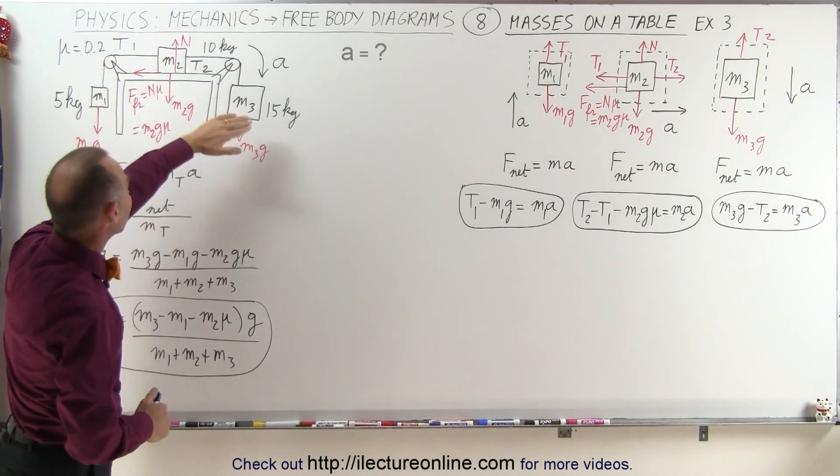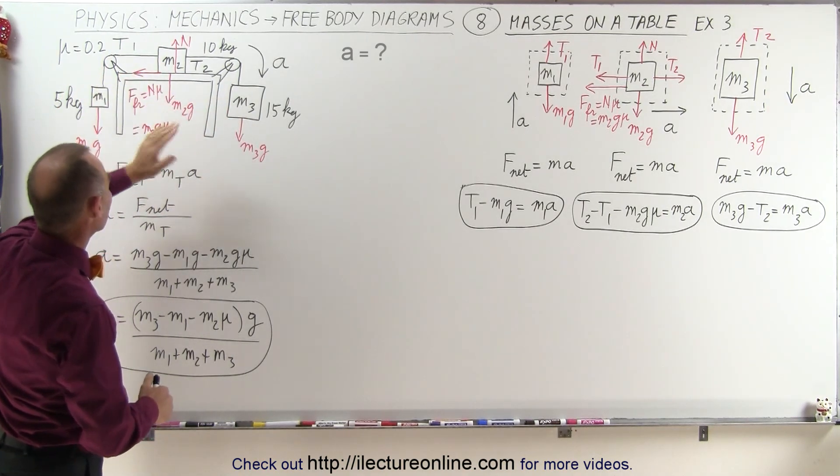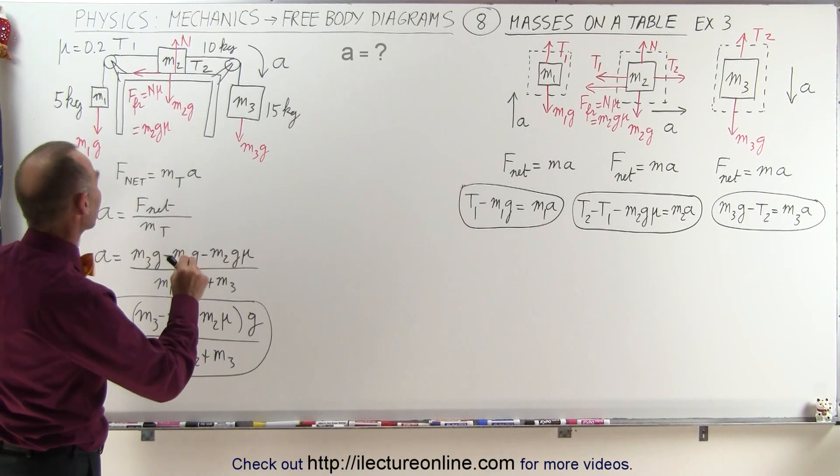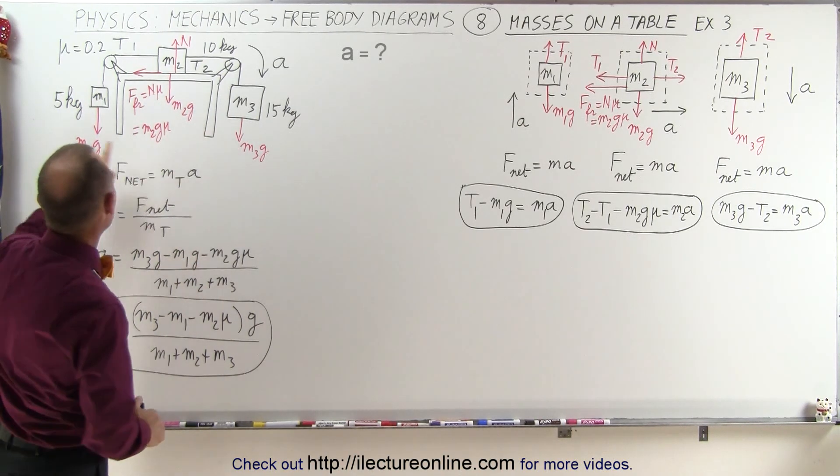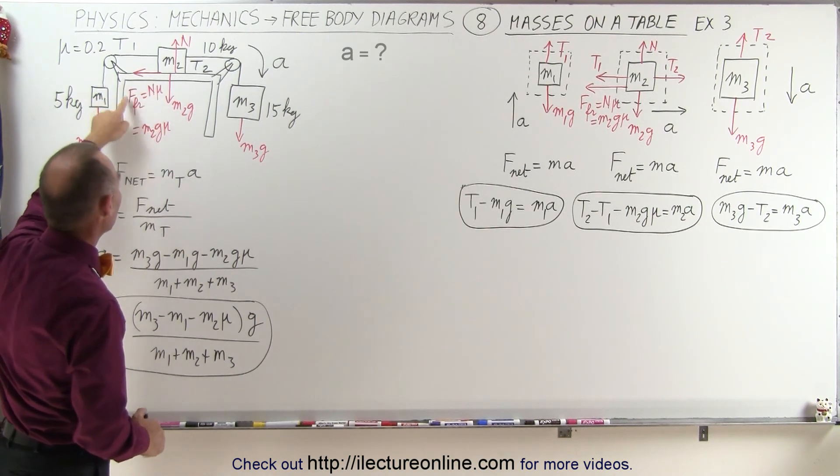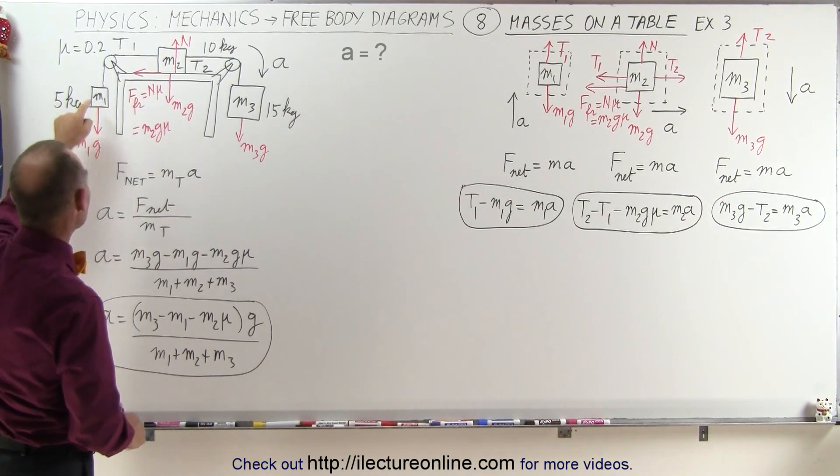Notice that everything is connected, we do not look at T1 or T2, those are internal forces. We only have three forces controlling the acceleration: the force aiding the acceleration, and the two forces opposing the acceleration, in this case the friction force and the weight of M1.